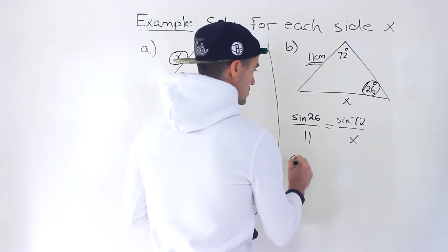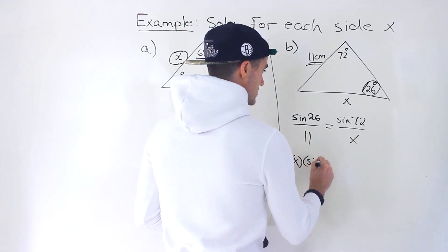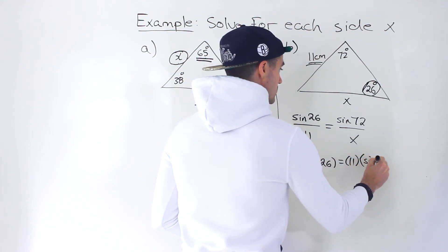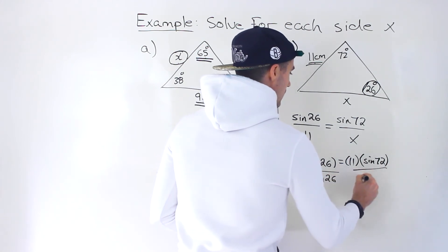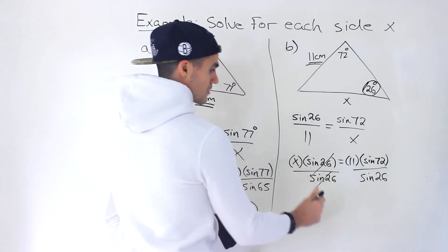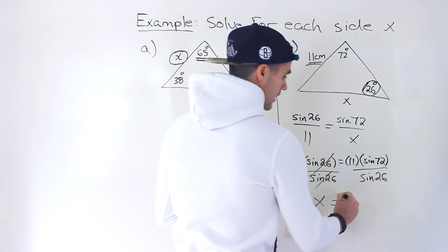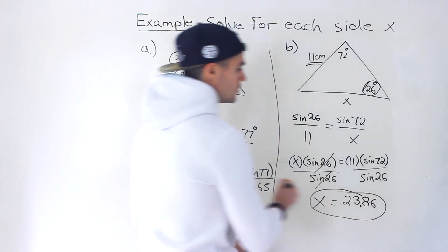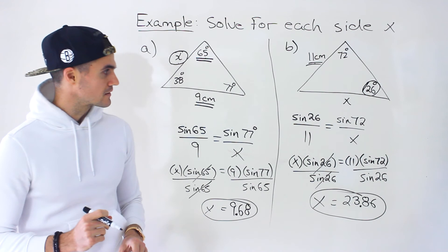From here we can just go ahead and solve this by cross multiplying: x times sine of 26 equals 11 times sine of 72. Then we divide both sides by sine of 26 to isolate x. When you do that calculation and put it all in your calculator you end up with 23.86. So that is the final answer — that is the length of side x.